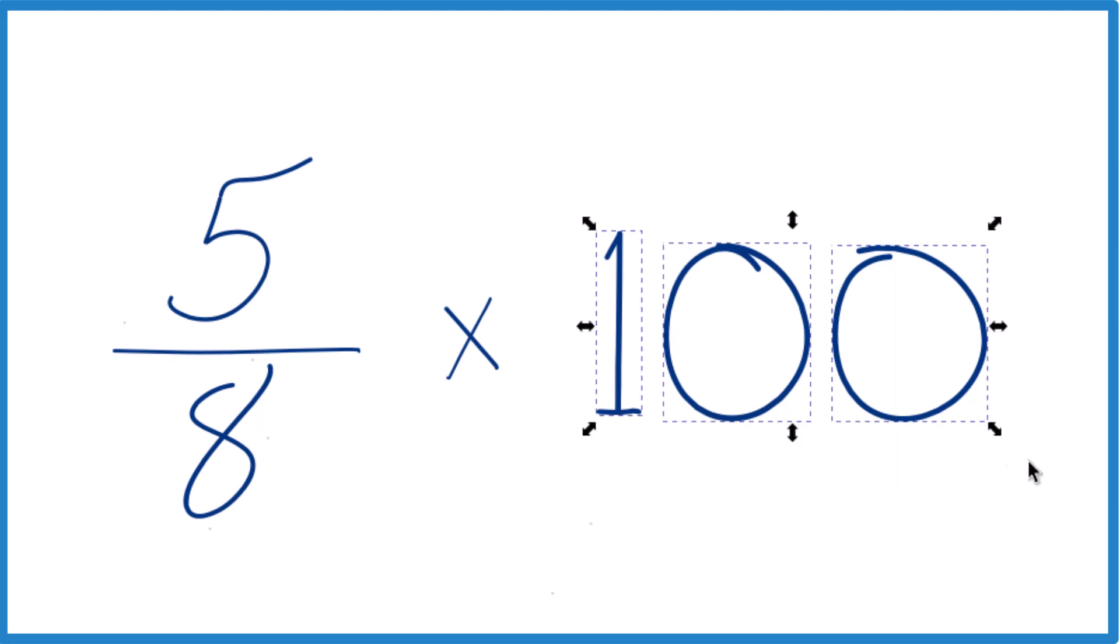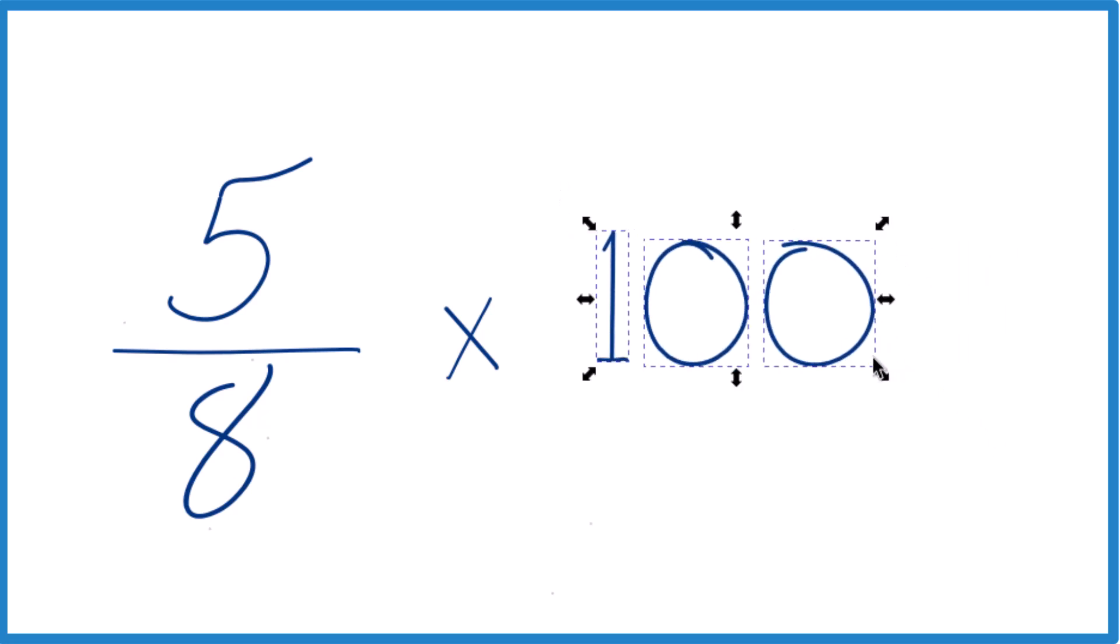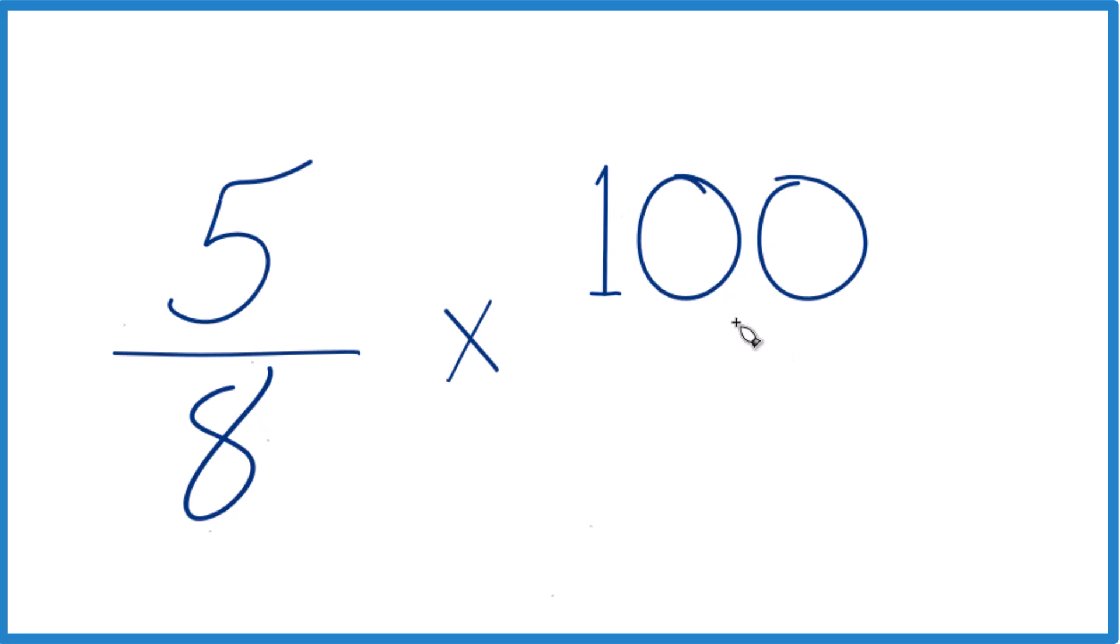And then for 100, let's make this into a fraction. Let's call this 100, and we'll put it 100 over 1. Because 100 over 1, 100 divided by 1, it's still 100. We haven't changed the value. Just now we have fraction times a fraction. That's a lot easier.